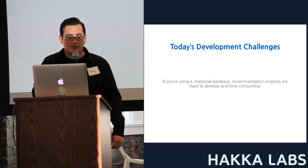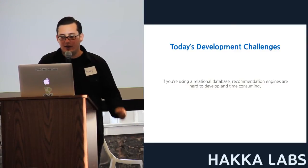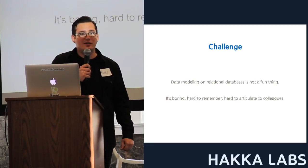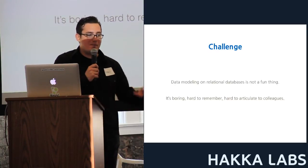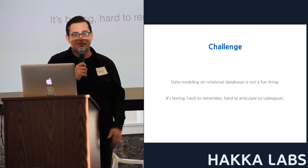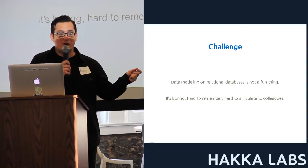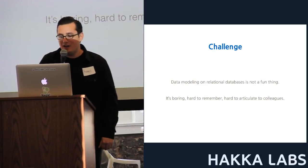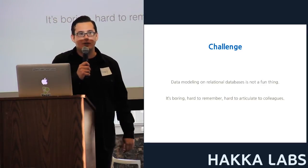Some development challenges: if you're using a relational database, recommendation engines are hard to develop and time consuming. Data modeling on relational databases isn't fun — designing enterprise resource diagrams and table schemas is a pain. But when I started using Neo4j for graph data modeling, it was an epiphany. I could query these chains to do things that are really, really difficult using a relational database. It's boring and hard to articulate to colleagues when working with relational tables.